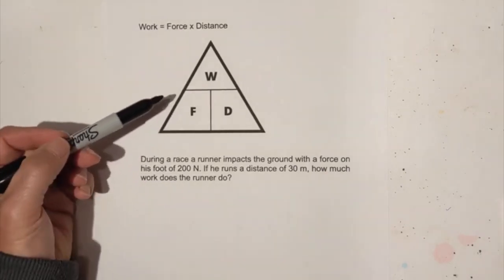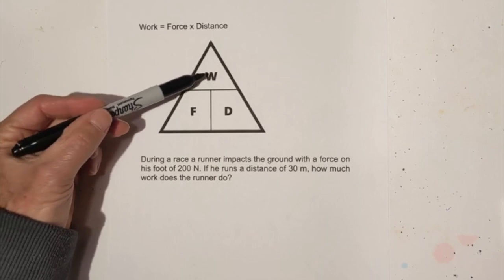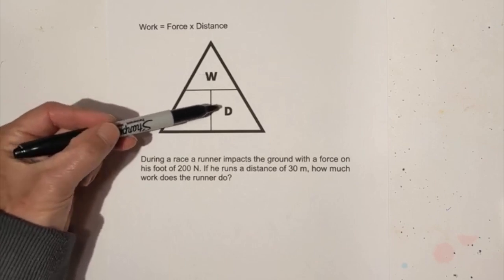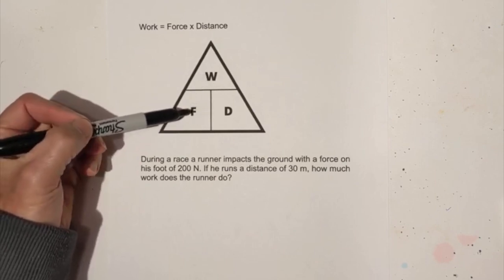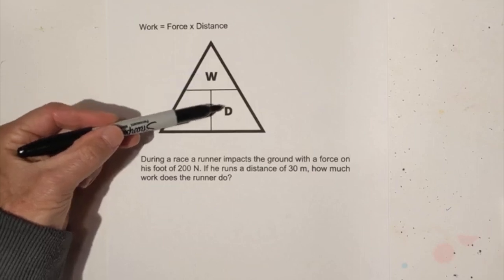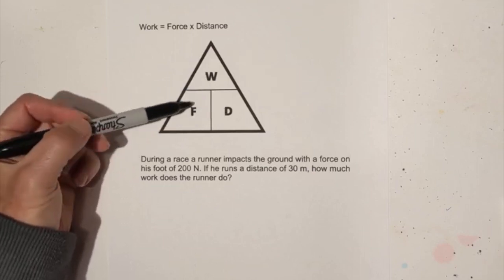I have this nifty triangle here and it can be helpful because if you want to find work it's force times distance. If you want to find force it's work divided by distance, and distance is work divided by force.